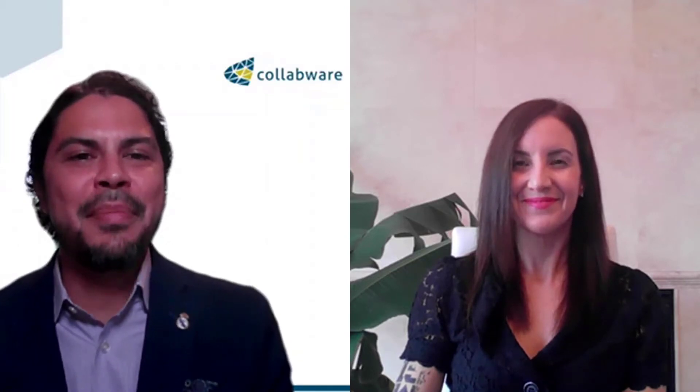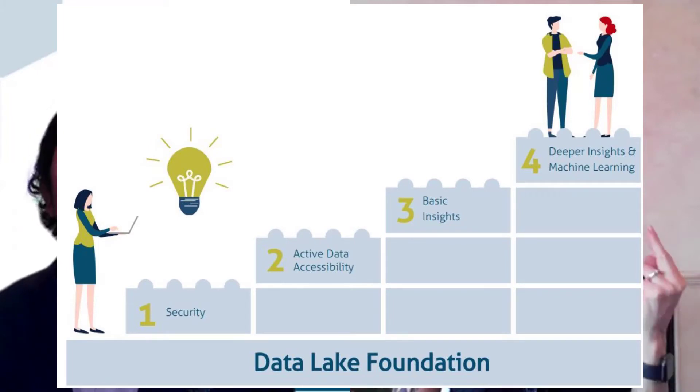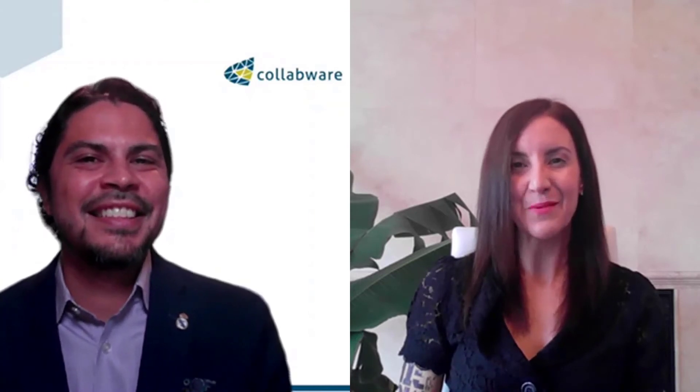Excellent, David. Well, that wraps up our very first Collab Chat. How do you feel about being part of this pineapple world? Amazing — much sweeter than an apple. So what's next? Now that we've discussed the data lake as a foundation, we will be looking at four building blocks for achieving unstructured data intelligence, which are security, active data accessibility, basic insights, and deeper insights in machine learning. We're looking forward to our next Collab Chat. Please leave us with your comments and feedback. Goodbye and stay tuned for next week. Thanks for watching.